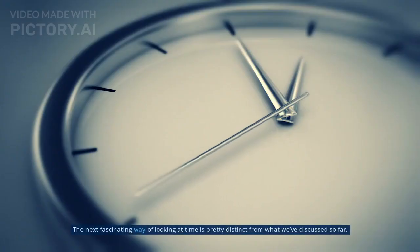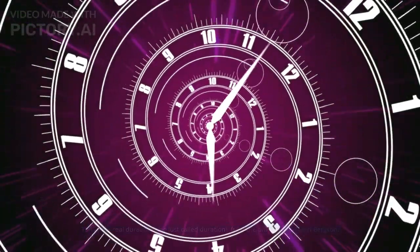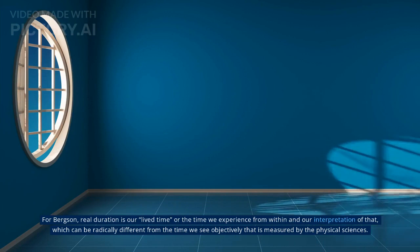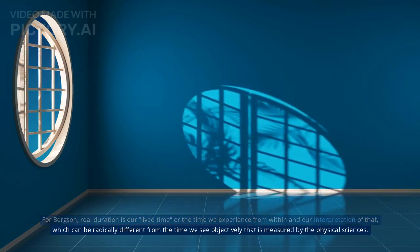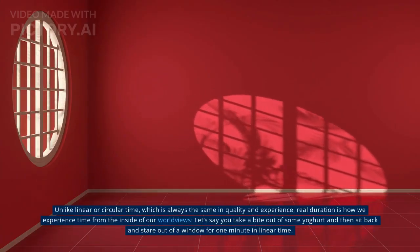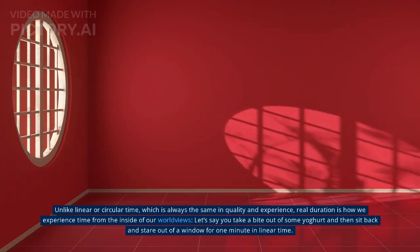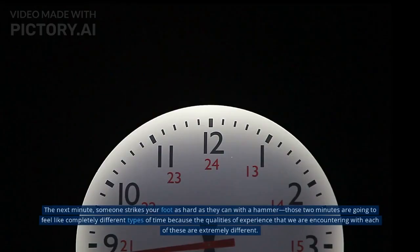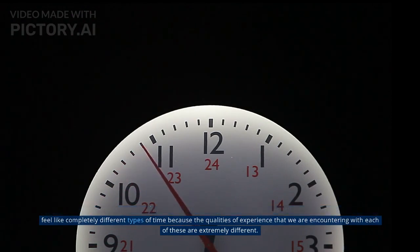Number 3: Real Duration. The next fascinating way of looking at time is pretty distinct from what we discussed so far. This is the real duration, also just called duration, from the philosopher Henry Bergson. For Bergson, real duration is our lived time or the time we experience from within and our interpretation of that, which can be radically different from the time we see objectively that is measured by the physical sciences. Unlike linear or circular time, which is always the same in quality and experience, real duration is how we experience time from the inside of our worldviews. Let's say you take a bite out of some Yorkshire pudding and then sit back and stare out of a window for one minute in linear time. The next minute, someone strikes your foot as hard as they can with a hammer. Those two minutes are going to feel like completely different types of time because the qualities of experience that we are encountering with each of these are extremely different.